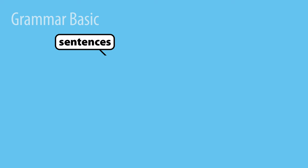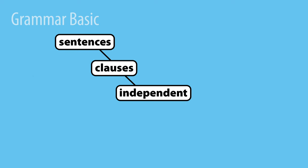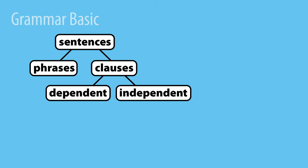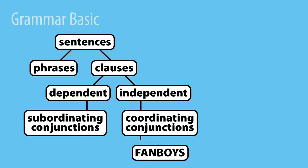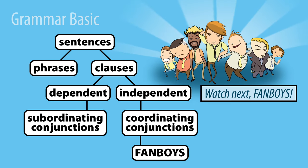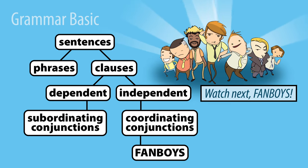Sentences can have lots of combinations of independent clauses, dependent clauses, and phrases. These get connected by punctuation, subordinating conjunctions, or the fabulous FANBOYS — coordinating conjunctions. Be sure to catch the FANBOYS video next.